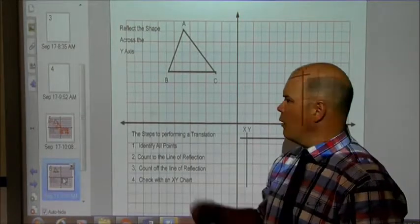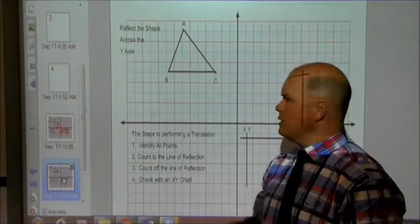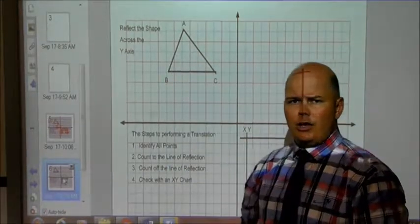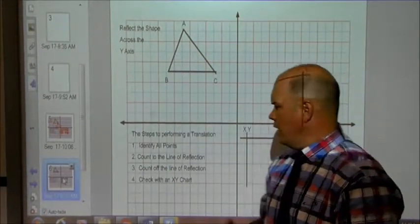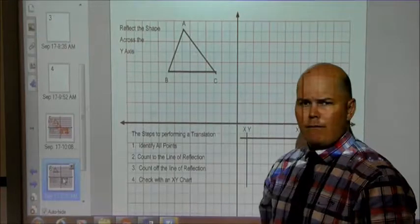Hey guys, this is Mr. Robinson, and I wanted to take a couple minutes today in Two Minutes of Math to talk about reflecting shapes across an axis. It basically breaks down into about four to five rules.